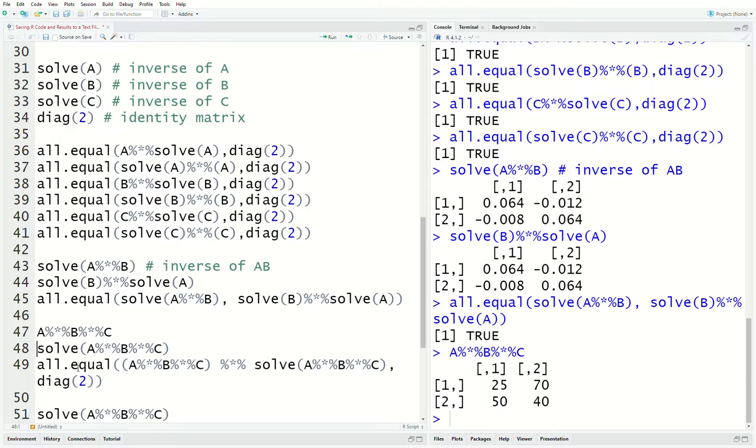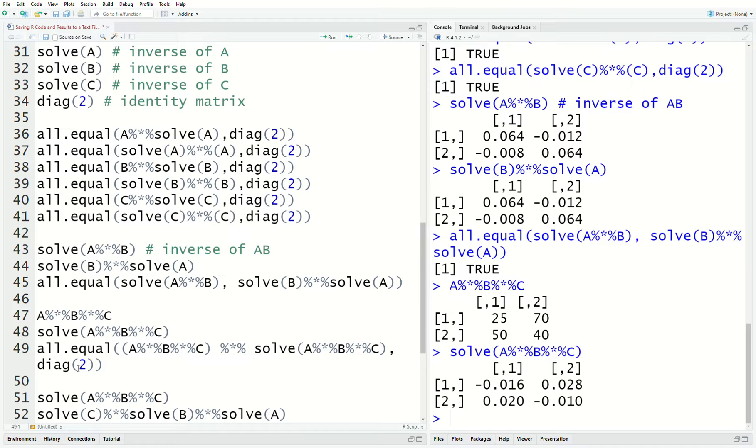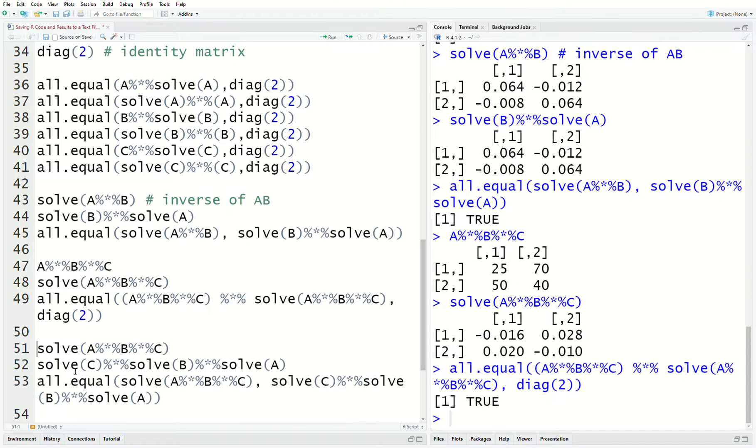So, here we have the product of ABC is that. Solve ABC. So, that's the inverse of the matrix ABC. And to show that they are inverses of each other, we could take the product of those and see if it's the identity matrix. And it is.